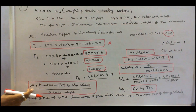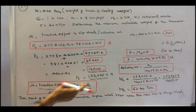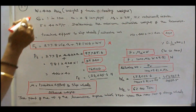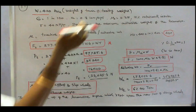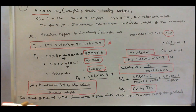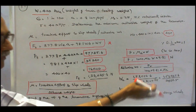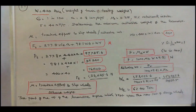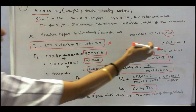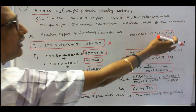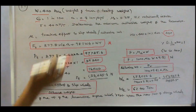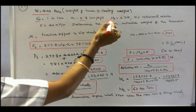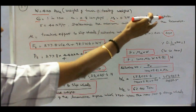We know the coefficient of aggregation equals tractive effort to slip wheels divided by adhesive weight. The weight of the train is given as 400 tons, equal to weight of train plus trailing weight. Trailing weight is the part of the weight of the locomotive engine which rests upon the rear driving wheels. G is given 1 in 100, so percentage G equals 1. Acceleration is 0.8 km per hour per second, coefficient of aggregation is 0.25, and rotational inertia is 10%.